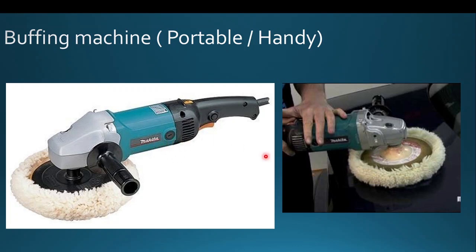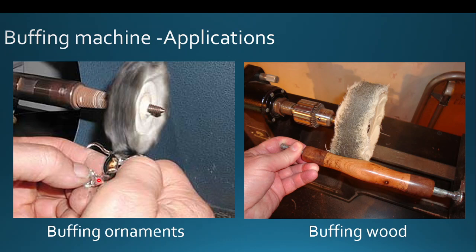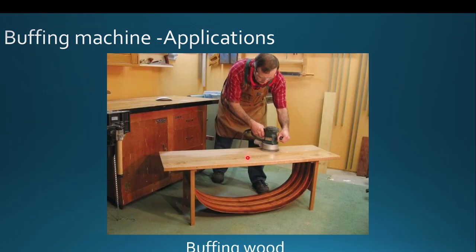Buffing applications include: polishing metallic workpieces by feeding them against the rotating buffing wheel to achieve mirror finishing; removing car body scratches; polishing ornamental items like studs or chains. Wooden buffing is also very popular for producing highly polished wooden articles and for smoothing flat wooden surfaces to a very high finish using a buffing tool.